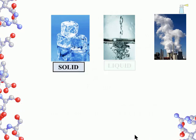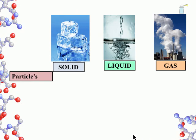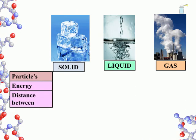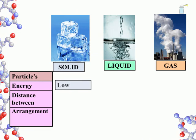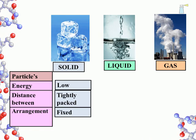There is solid, liquid, and gas, which is also referred to as vapor. We will discuss these three states of matter based on the behavior of the particles that make up that matter, considering their energy, distance, and arrangement. Beginning with solid: the energy of particles in the solid are relatively low, the particles are tightly packed, and they are in fixed locations relative to each other. For liquids, the energy of the particles are higher — medium as compared to solids.